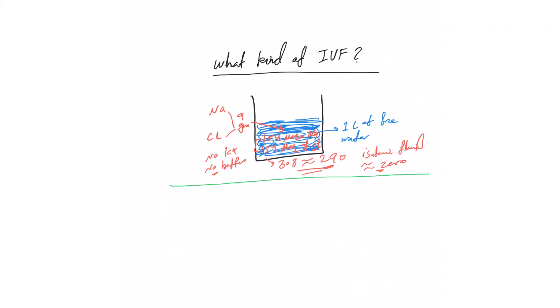Because it has minimal or no free water, it can lead to hypernatremia. And because of the lack of buffer, it can lead to hyperchloremic, normal anion gap metabolic acidosis, where the chloride is usually high.